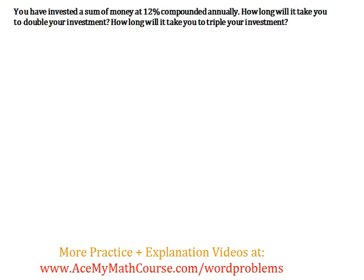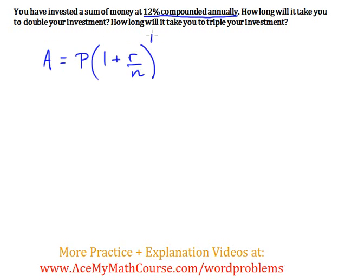You have invested a sum of money at 12% compounded annually. We're going to be using this formula here: A equals P times 1 plus R divided by N to the power of TN. I'm going to quickly review the components in a second. How long will it take you to double your investment, and how long will it take you to triple your investment?